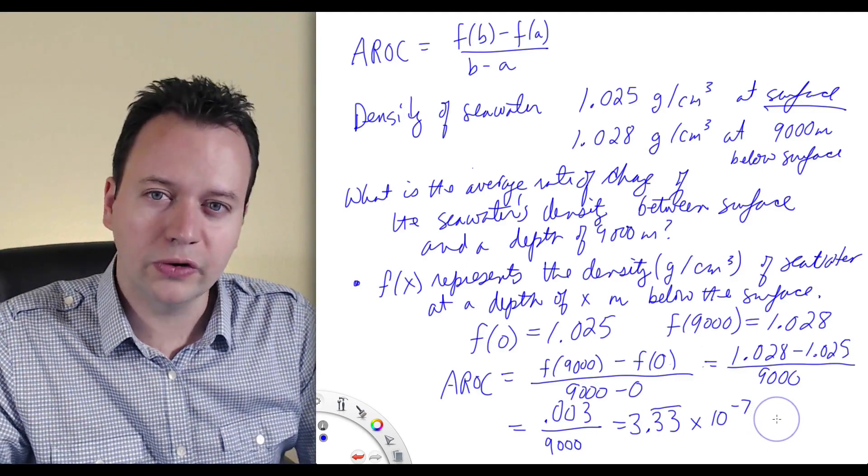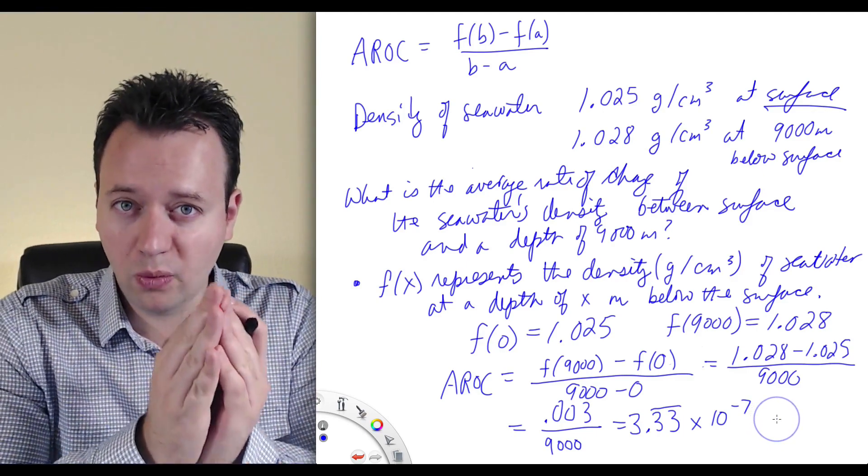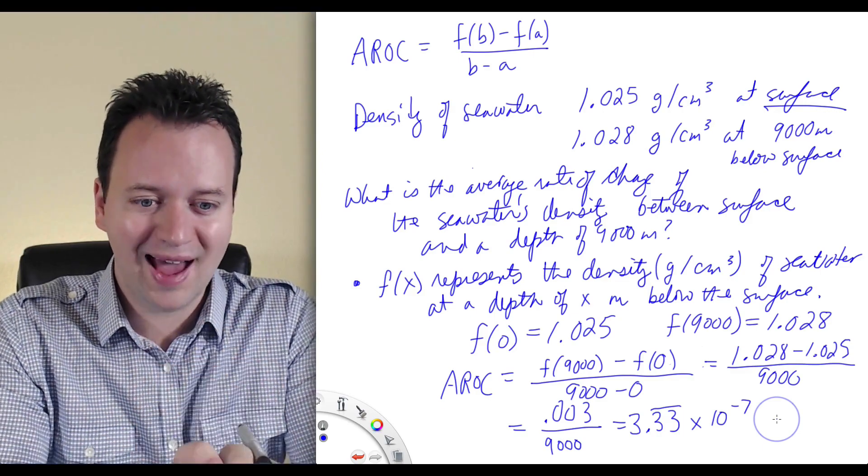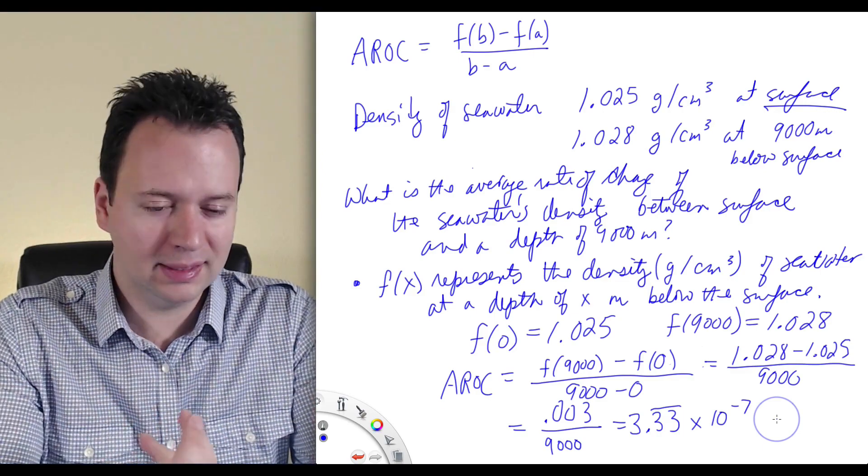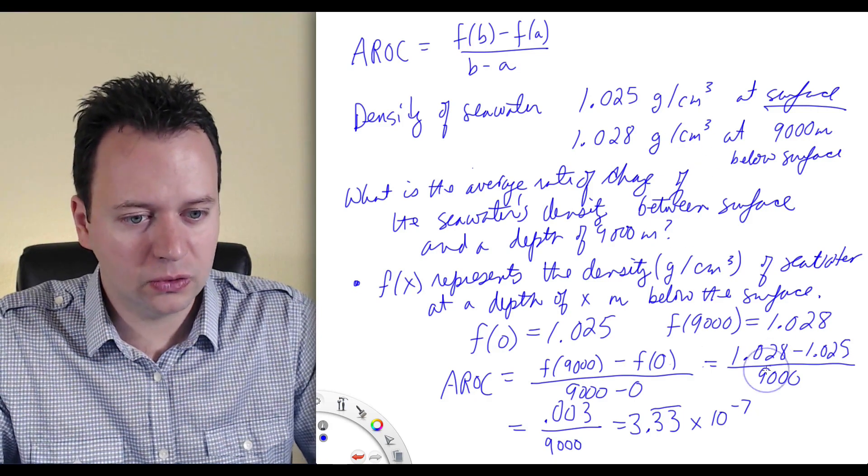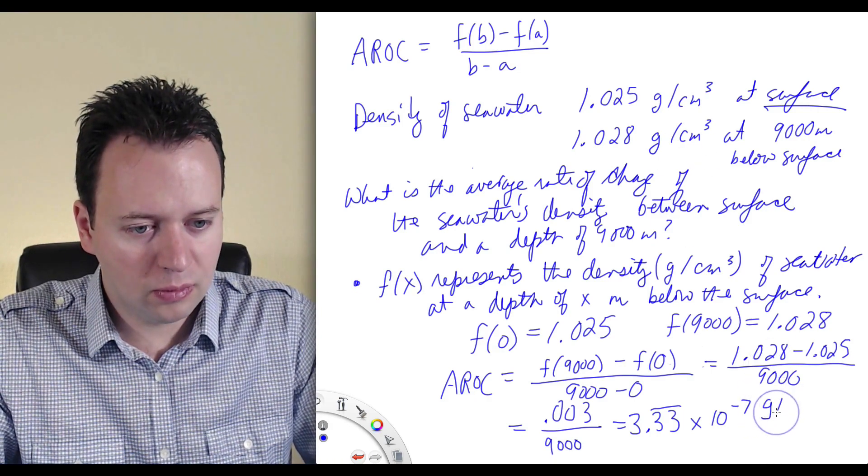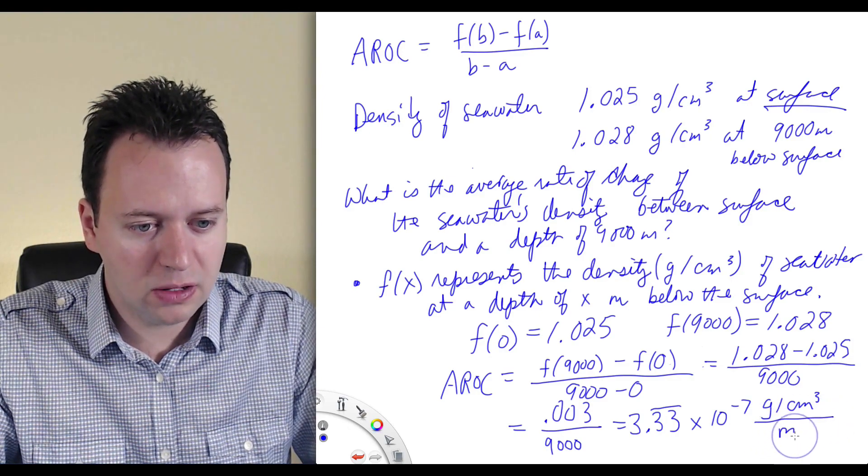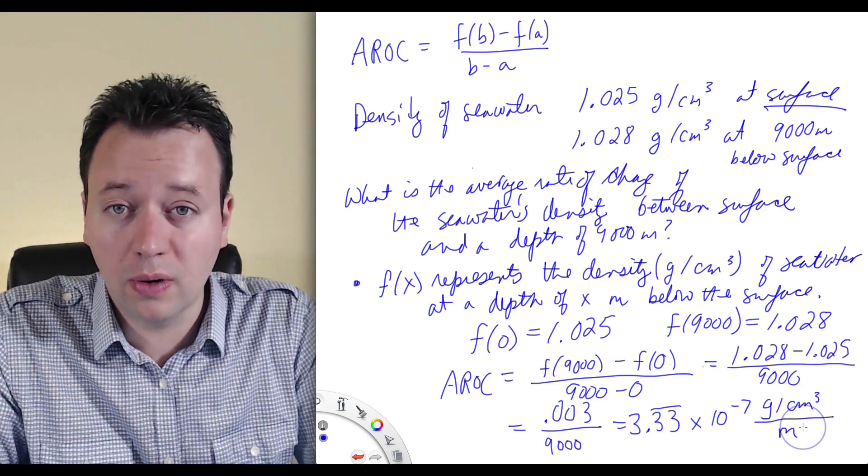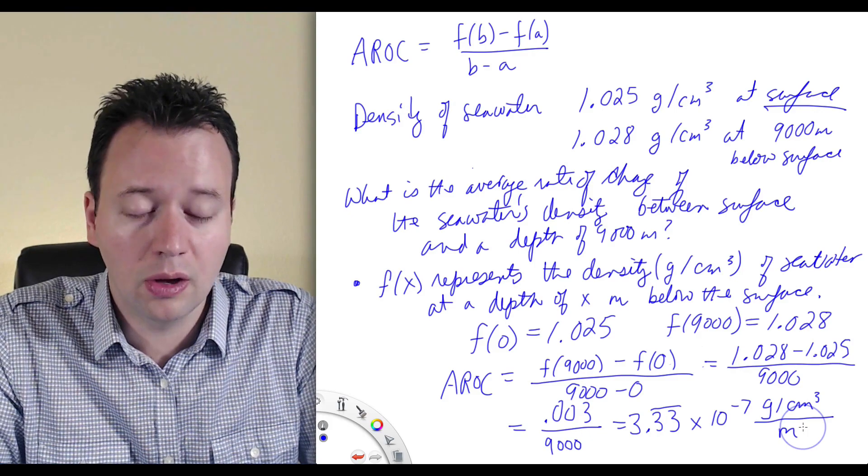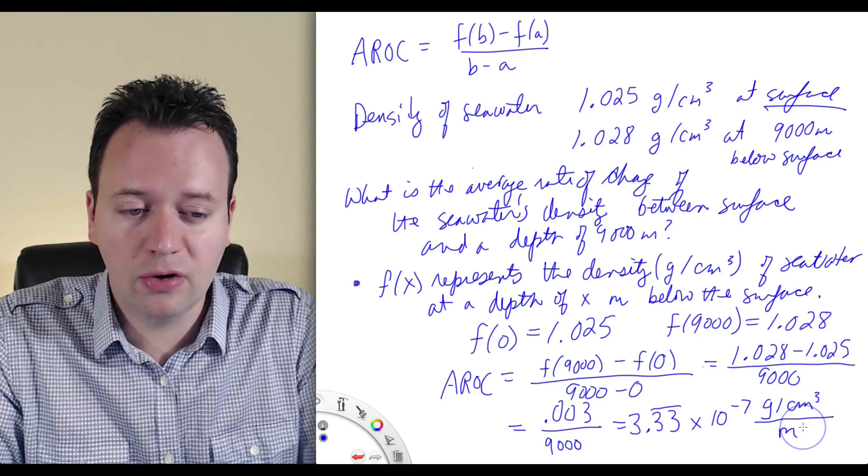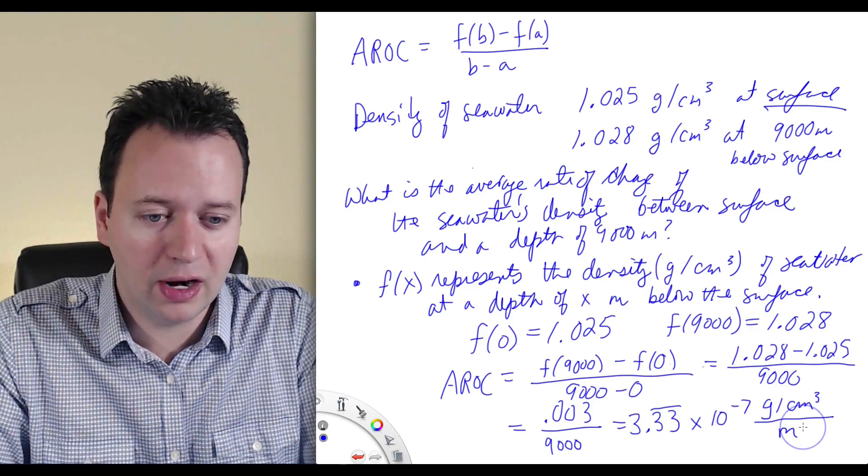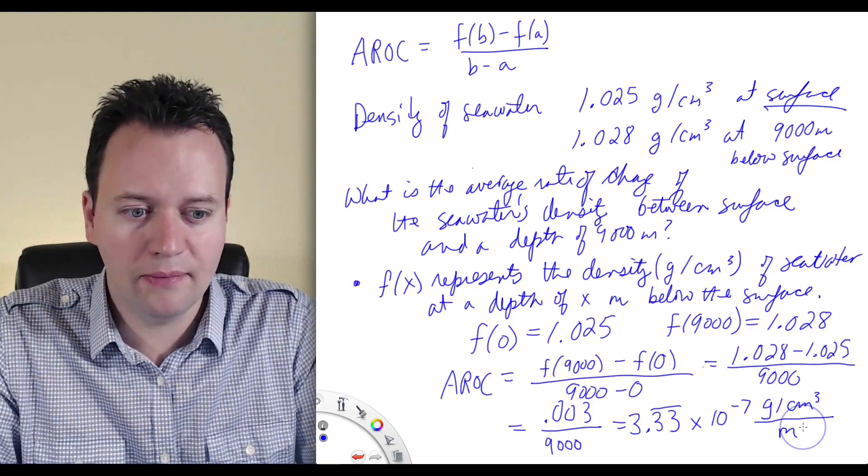Now, what are the units on this? So it's going to be the units of the y variable, the units of f, divided by the units of x. Now, f is the density, and the density has units grams per centimeters cubed. And then x has density of meters. So the units are in grams per centimeters cubed per meter.